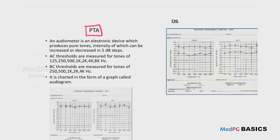In a pure tone audiometry, it is basically an electronic device that can produce sound waves — pure tones of intensity. We describe the intensity in decibels, and this intensity of pure tones can be varied in 5 decibel steps. It can be either increased or decreased in 5 decibel steps, and we measure the hearing at various frequencies.